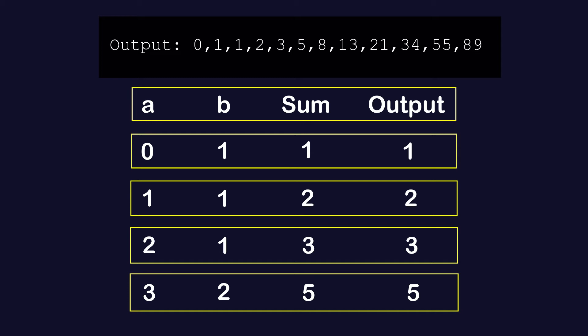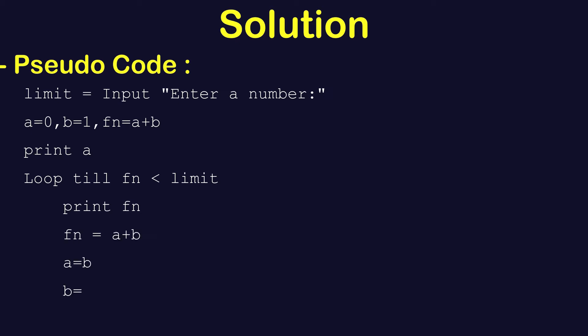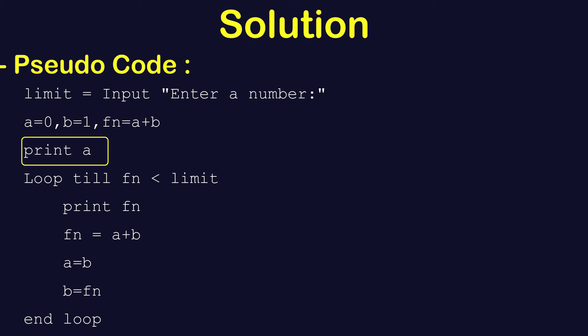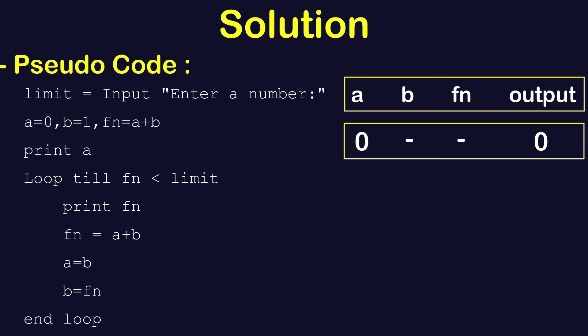Let's try to understand the solution using the pseudo code. We are taking a variable called 'limit' where the user enters the end limit for the series. We are also taking two values: 'a' which is the first value zero, and 'b' which will be one. We are also taking one more variable 'fn' to store the Fibonacci number — the sum of the previous two numbers. Because we want to print zero and one from the beginning, we directly print the value of 'a', so the output will be zero.